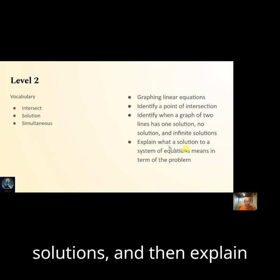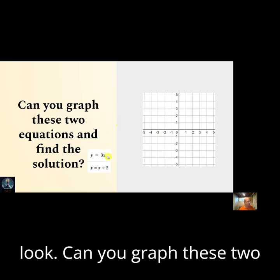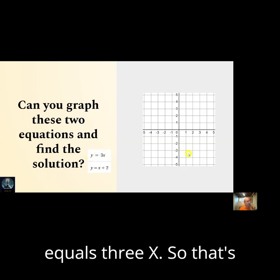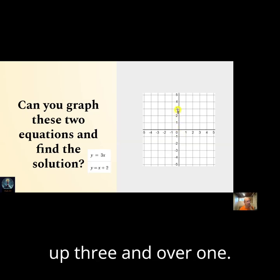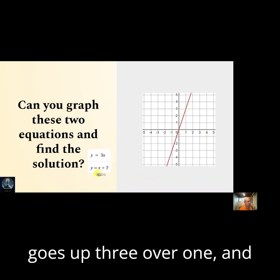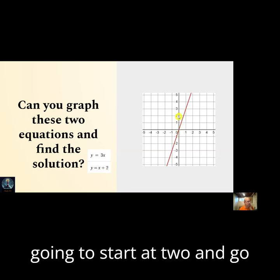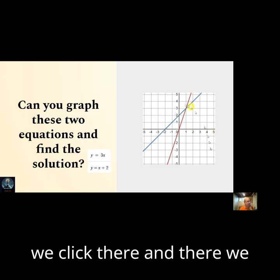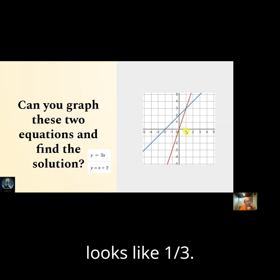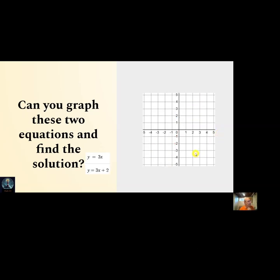So let's take a look. Can you graph these two equations and find the solution? The first thing was can you graph them. So y equals 3x, that's going to start at 0 and go up 3 and over 1. So there we go, starts at 0, goes up 3 over 1. And then y equals x plus 2, so that's going to start at 2 and go up 1 and over 1. And can you find the solution? The solution looks like (1, 3). There it is, pretty easy.